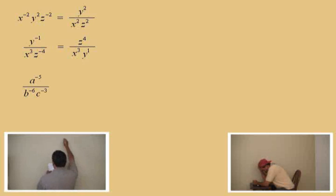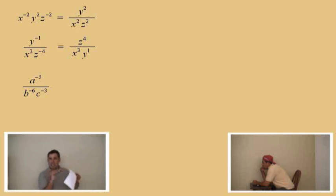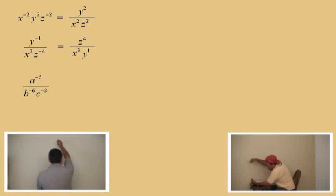Let's do another one using variables A, B, and C. Notice with this one, all of the exponents are negative, so we're going to have to move things around — top to bottom, bottom to top. We have A to the negative 5 on top, so we take that to the bottom. B has a negative exponent and is on the bottom, so we take it to the top. C is on the bottom with a negative exponent, so we take it to the top as well. Our answer is B to the sixth times C to the third over A to the fifth power.